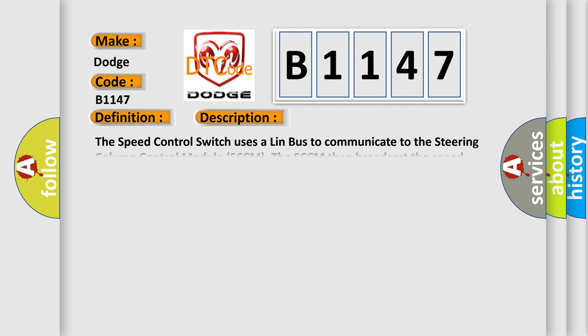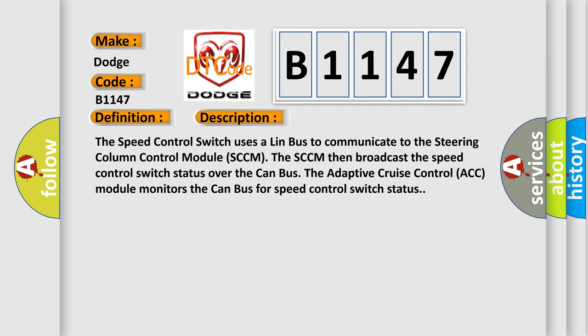And now this is a short description of this DTC code. The speed control switch uses a LIN bus to communicate to the steering column control module SCCM. The SCCM then broadcasts the speed control switch status over the CAN bus. The adaptive cruise control ACC module monitors the CAN bus for speed control switch status.